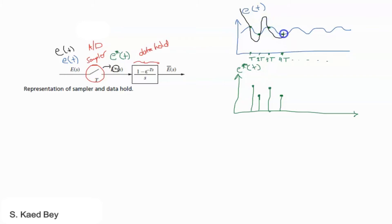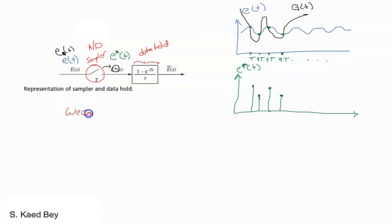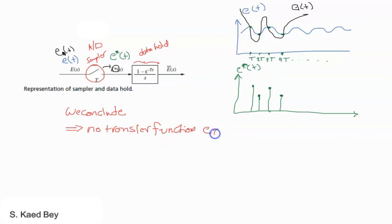This second signal is completely different from the original e of t — let's call it e-one of t. The black one is e-one of t. If we sample it at the same period, we get the same result. We therefore conclude that no transfer function exists for the sampler, because we could have many different input signals that result in the same output e-star function.